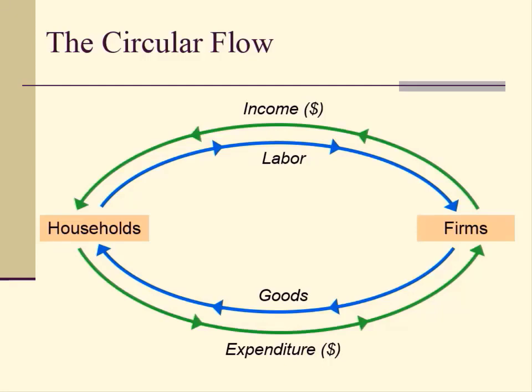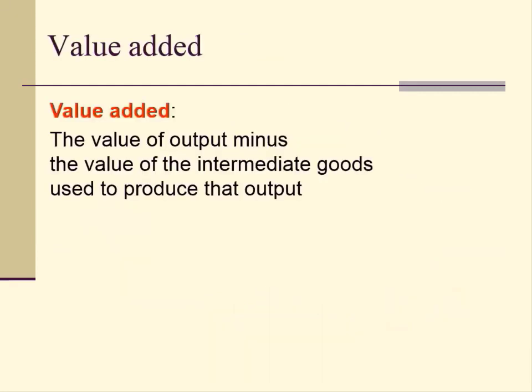Expenditure of the households eventually equals income to the households, because every dollar spent by a buyer becomes income to the seller in both factor markets and goods markets. Now let's define another important concept: value added. Value added is defined as the value of output minus the value of the intermediate goods used to produce that output. For example, that output could be computers — the value of computers minus the value of intermediate goods such as computer chips and motherboards becomes the value added for the computer manufacturer.